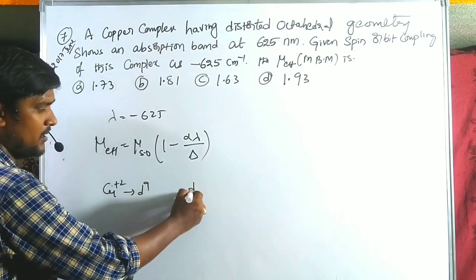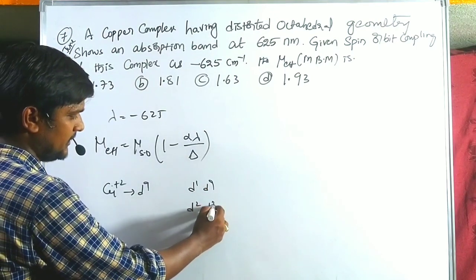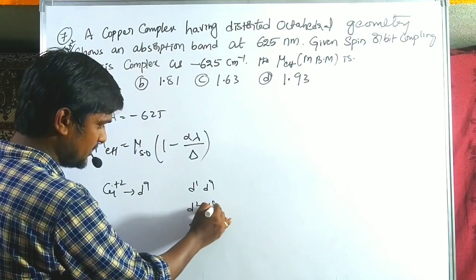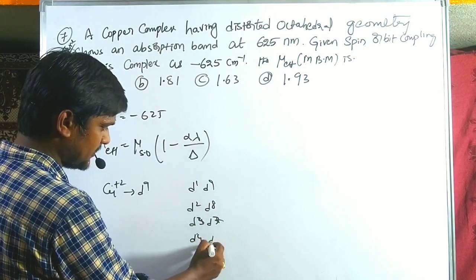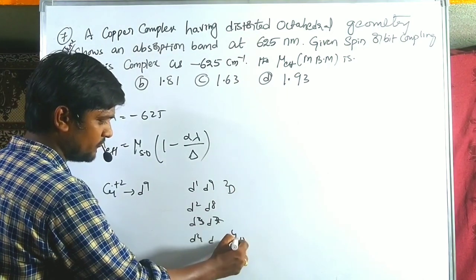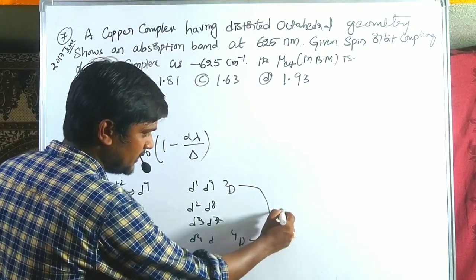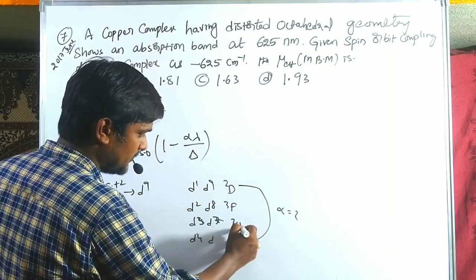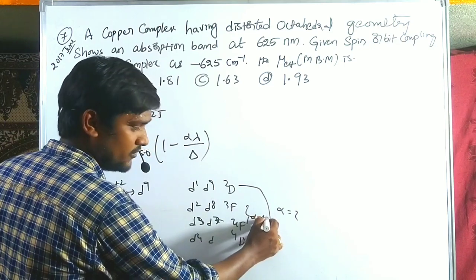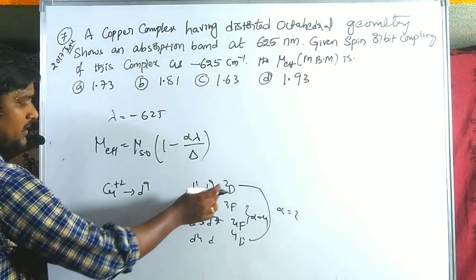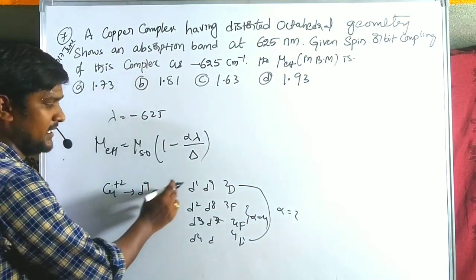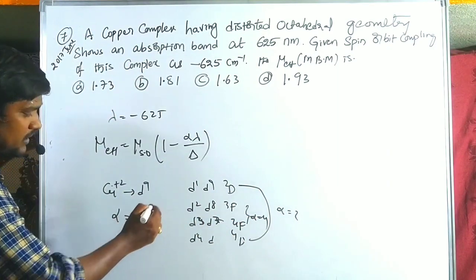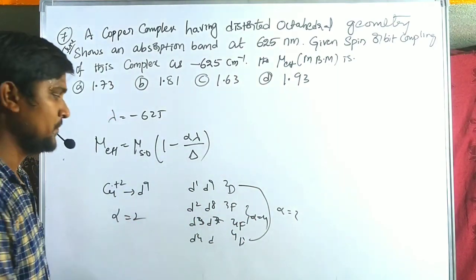Cu²⁺ is d⁹ configuration, which corresponds to the 2D term, so α = 2. The spin-only value for n = 1 is μ = 1.732 BM. The absorption band at 625 nm converts to Δ = 1/(625 × 10⁻⁷) = 10⁷/625 cm⁻¹. Now we substitute all values into the formula.